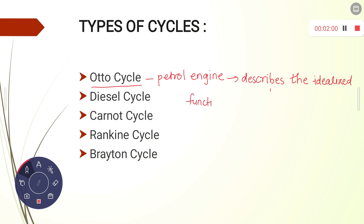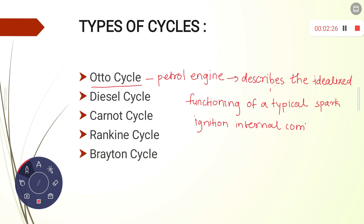The Otto cycle describes the idealized functioning of a typical spark ignition internal combustion engine. Now there will be a question in your mind: what is a spark ignition engine? Here the fuel is mixed with air and then inducted into the cylinder during the intake process. It is a mixture of air and fuel which is inducted into the cylinder.